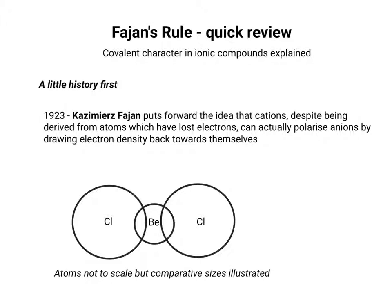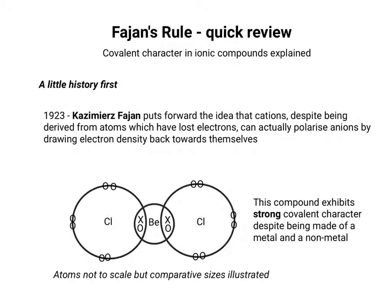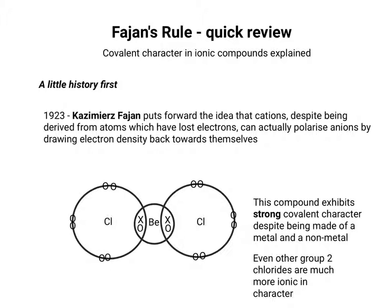Let me give you an example of how this might work. If we take beryllium chloride, the first thing you might notice is you've got a metal undergoing a covalent bond with a non-metal. This compound would exhibit strong covalent character, in spite of being made of a metal and a non-metal. Other group 2 chlorides, such as magnesium chloride or calcium chloride, would be much more ionic in their character and behaviour.